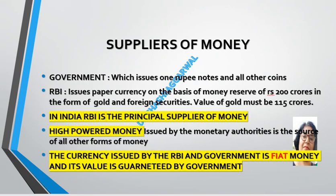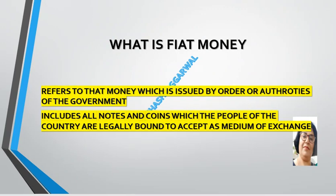The suppliers of money are: the government, which issues the one-rupee note and all other coins; and the RBI, which issues paper currency on the basis of a money reserve of 200 crore rupees in the form of gold and foreign securities, out of which the value of gold should be 115 crore. The RBI is the principal supplier of money. The currency issued by the RBI and government is fiat money — money issued by the order or authority of the government — which people are legally bound to accept as a medium of exchange.